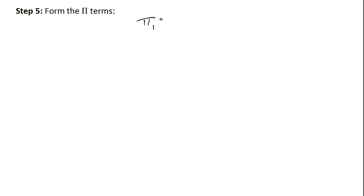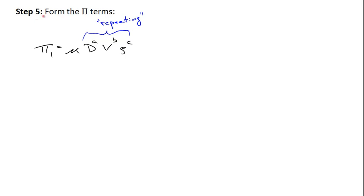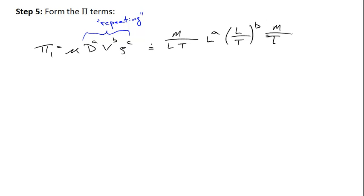The fifth step is to actually form the different pi terms. Pi one is equal to one of our non-repeating variables — the viscosity — times diameter to the a power, velocity to the b power, and density to the c power. Our goal is to find exponents a, b, and c such that the dimensions of this pi term are dimensionless. The dimensions of viscosity are mass per length·time, diameter is length to the a power, velocity is length per time to the b power, and density is mass per length cubed to the c power.